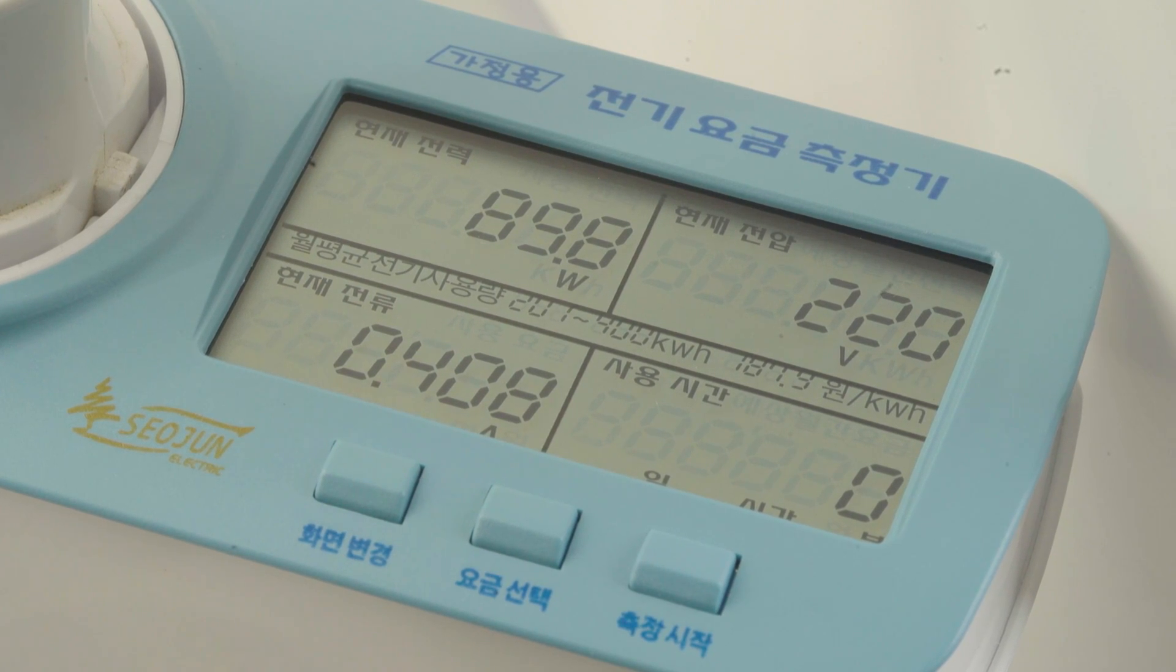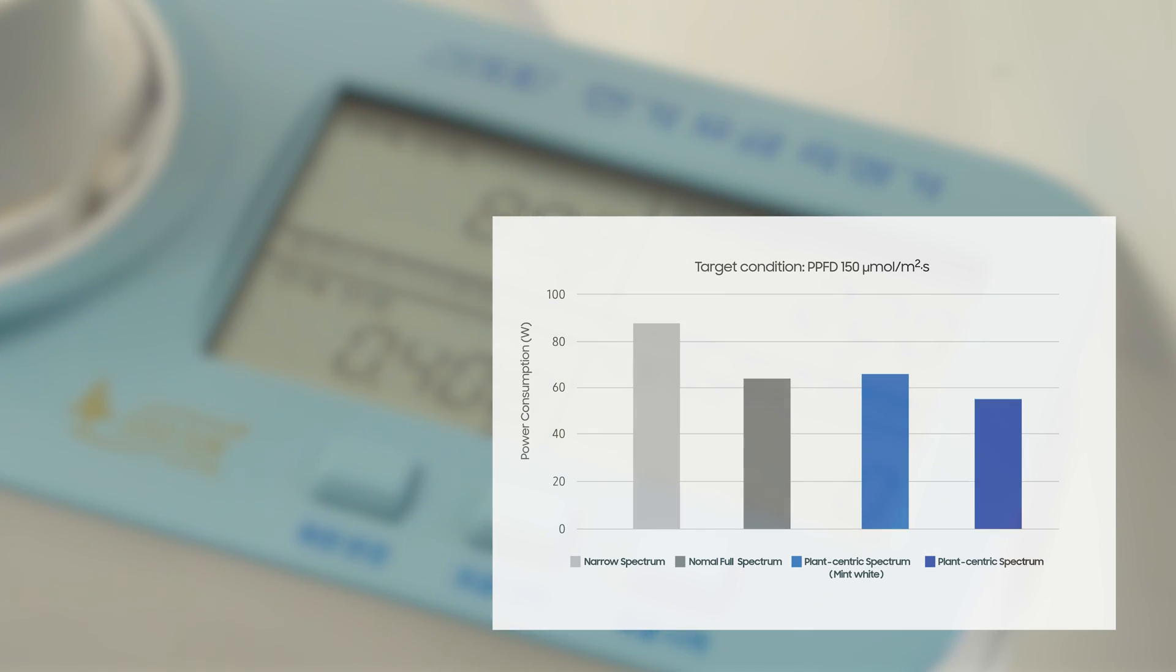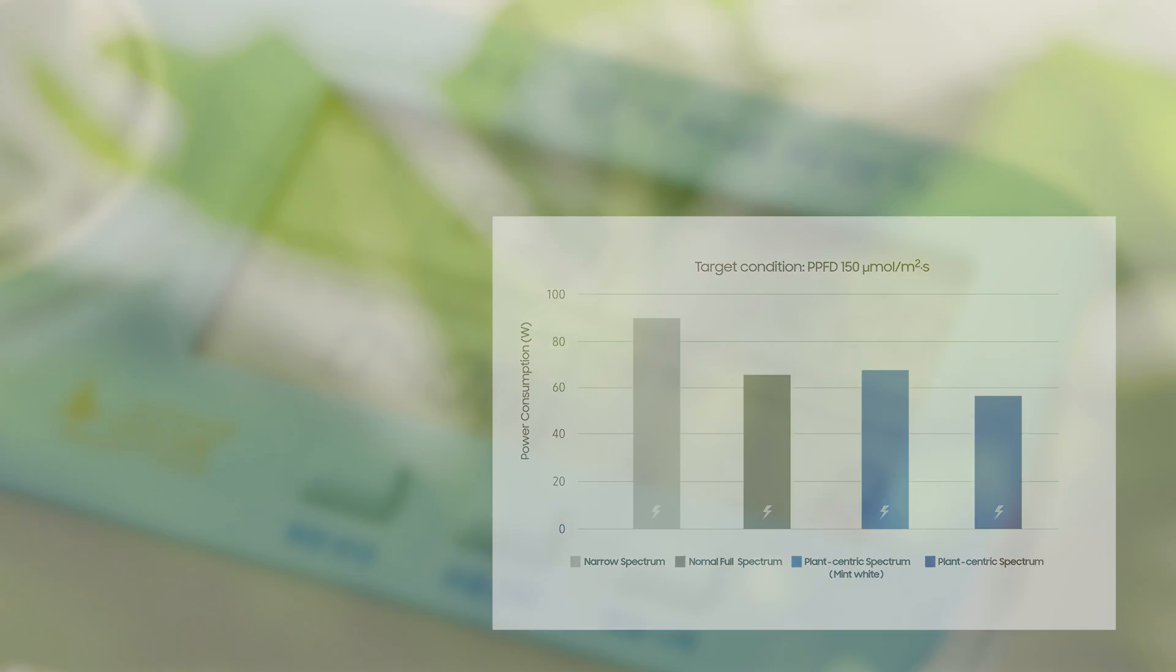On top of this, the 437 nanometer based light demonstrated a significantly higher energy use efficiency. These LEDs consumed less power than the narrow red and blue light while growing even larger and heavier crops.